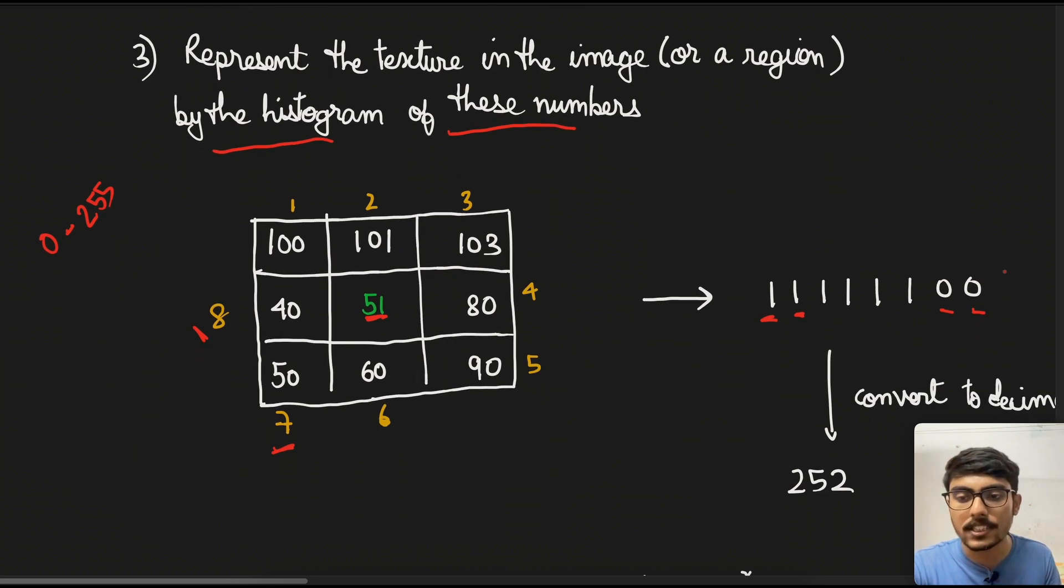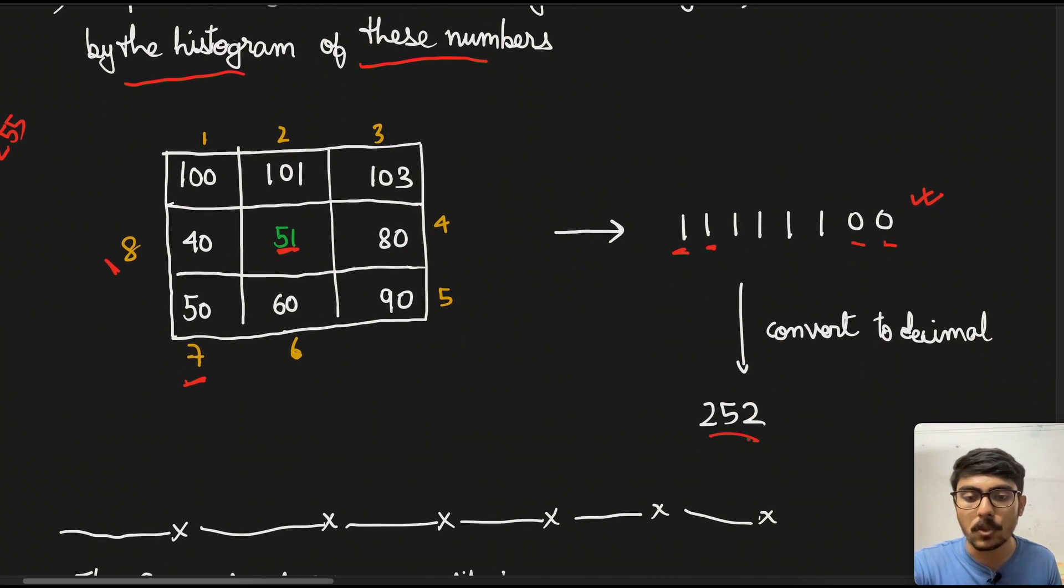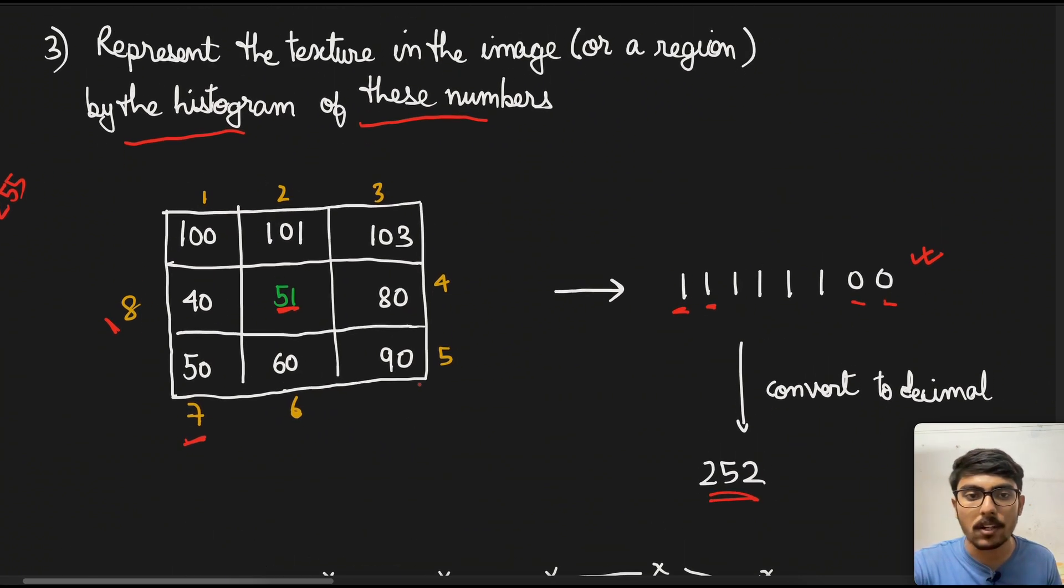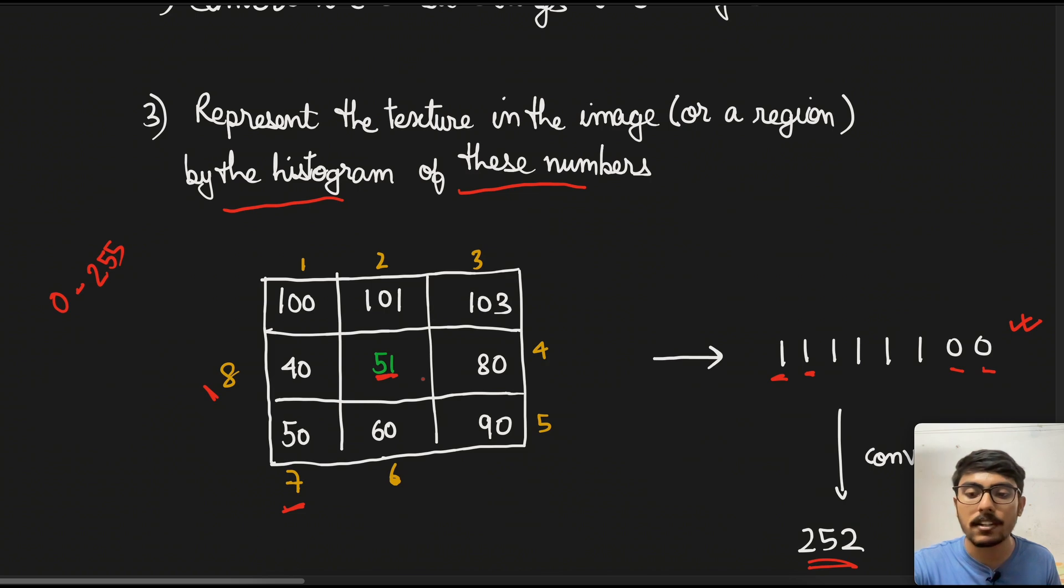But the last two pixels, you see, are less, so it is zero. If we convert this binary number into decimal, then we get 252. So this is how we calculate the LBP of any given image.